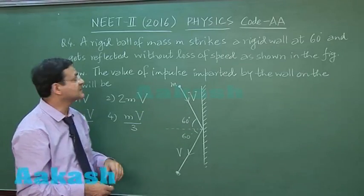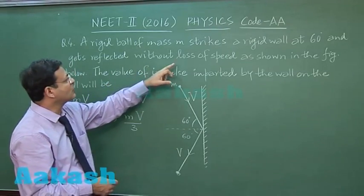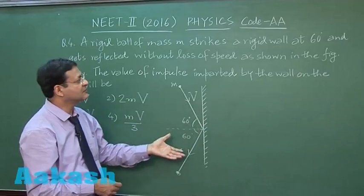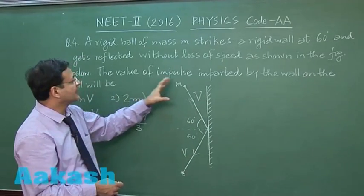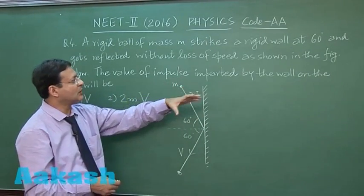The angle with the normal has been given as 60 degrees. It gets reflected without loss of speed as shown in the figure.